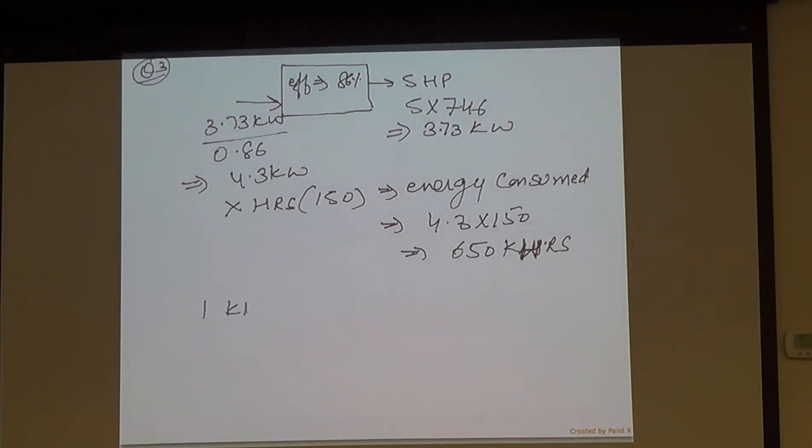Ten cents is 0.1 dollars. So 650 kilowatt hours will be 0.1 times the 650, which is 65 dollars, is the bill. End of the month to run this machine. It's not a hard question, but very, very important. Out of the three, this is the most important.